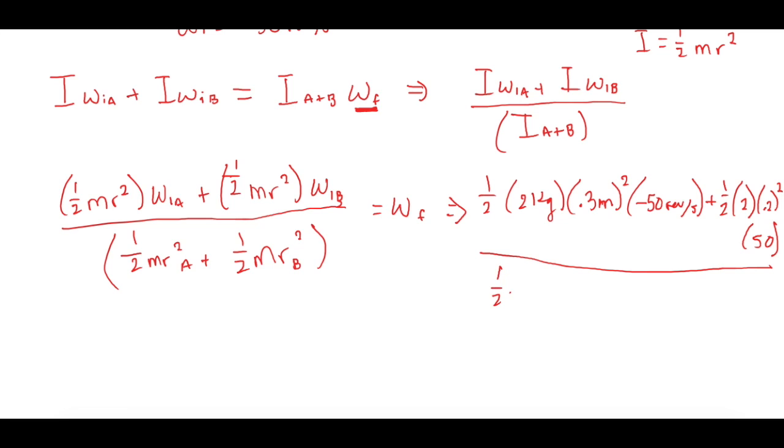So now we have 1 half, 2 kilograms, times the radius was 0.3 meters squared, plus the 1 half, 2 kilograms of B, times the radius of B, which we said was 0.2 meters squared.